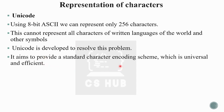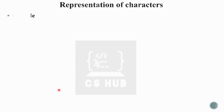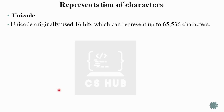Unicode aims to provide a standard character encoding scheme that is universal and efficient. ISCII was evolved for written languages of India, but it was replaced by Unicode. Unicode is universal and efficient, used to support all characters of all written languages of the world. It produces a unique number for every character no matter what the language or platform. Unicode originally used 16 bits, so with 16 bits we can represent 65,536 characters.